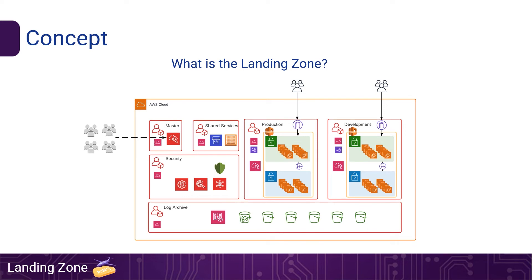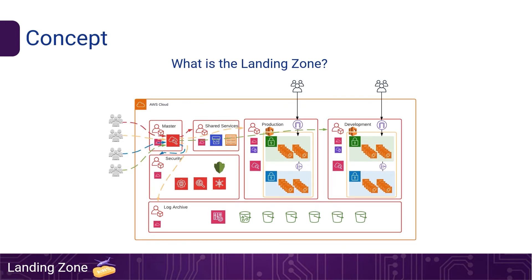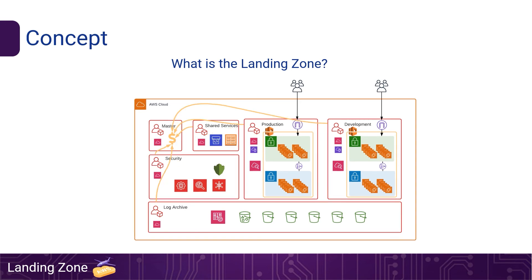Sounds good, yeah? But this is not all. In the case of segregation of duties, the landing zone helps a lot, because you will have one place for identification and authorization. This gives you an additional layer of security and audit. You can also control permissions for your team and allow the use of only permitted resources. On the business side, the landing zone can help as well — you don't need to manage costs for each account separately. In the landing zone you will have one main account responsible for this, and from there you can monitor and control your expenses.